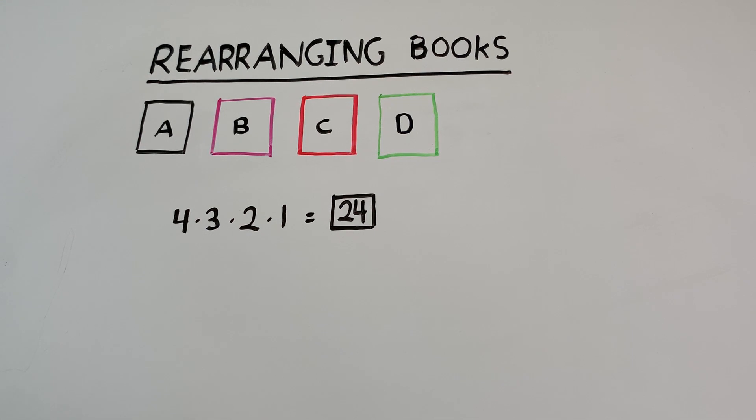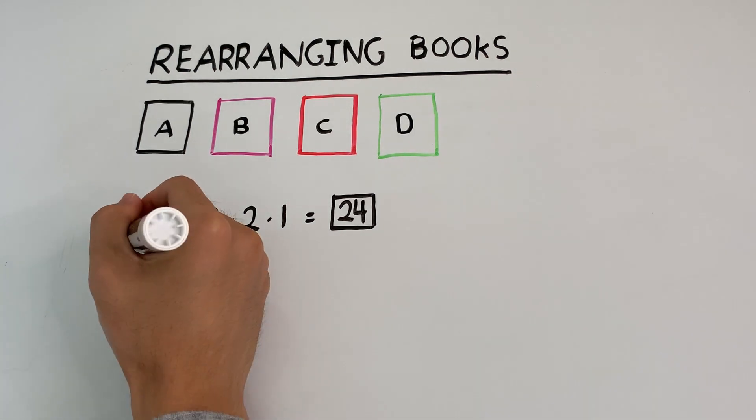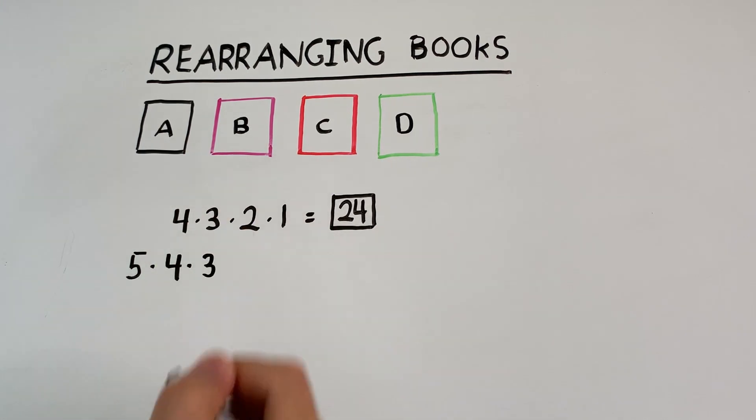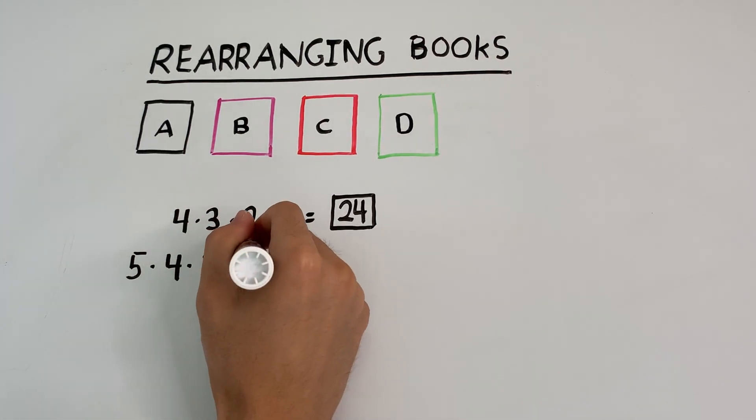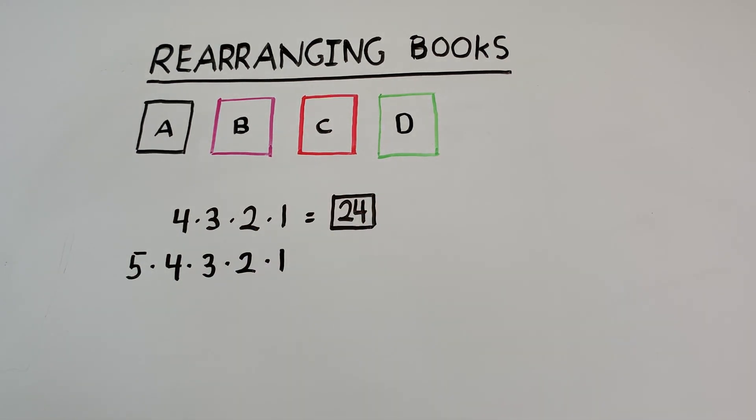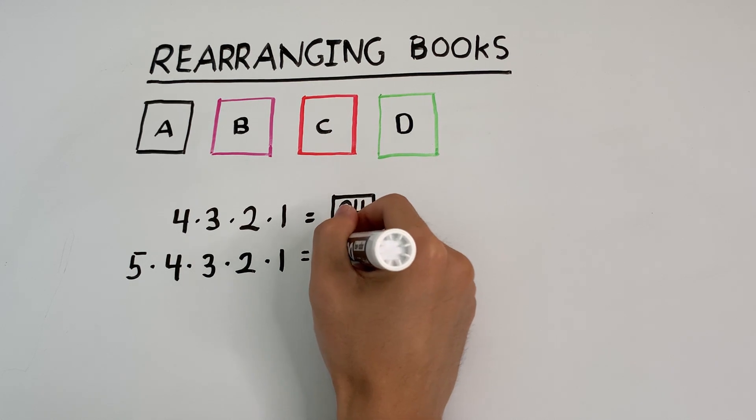And just for more practice, if we had five books, the process is still the same. How many ways are there to arrange five books on a shelf? Well, we have five choices for the first book. Four choices for the next. Three choices after that. Two choices after that. And finally, one last book as the final choice. So the answer is five times four times three times two times one, which is 120.